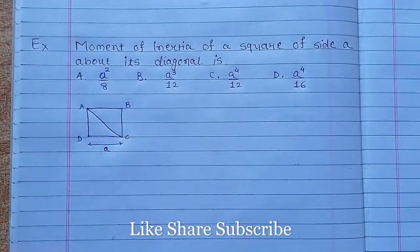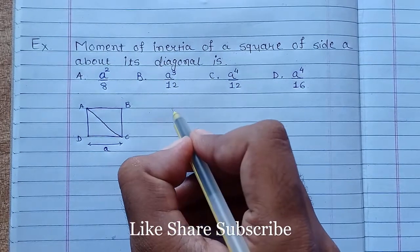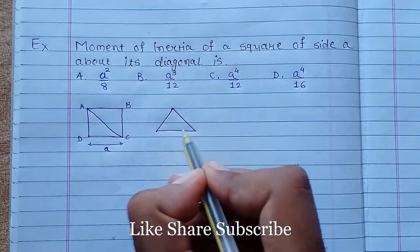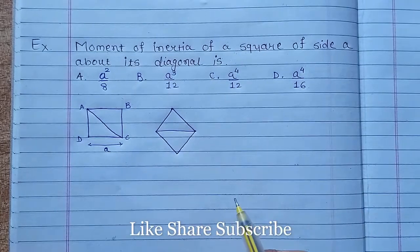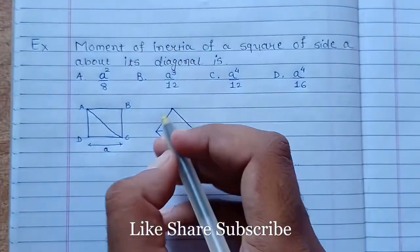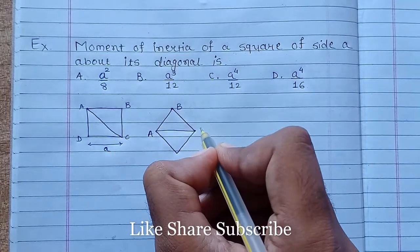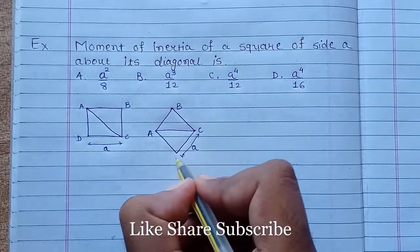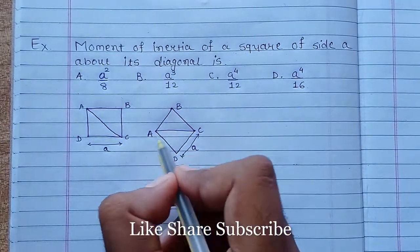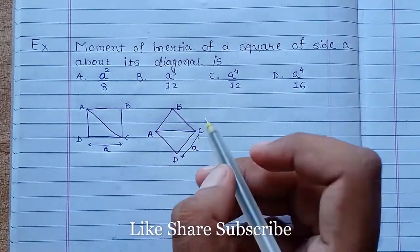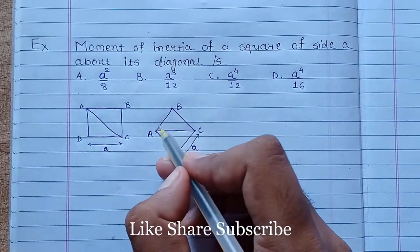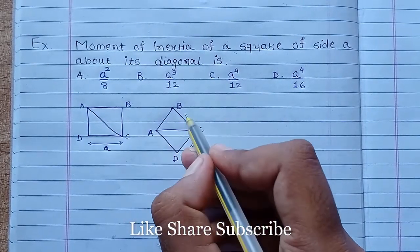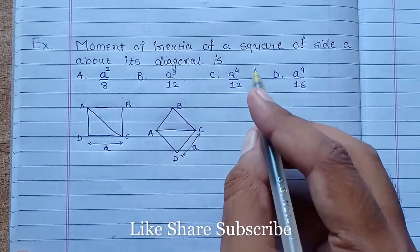Now let's rearrange this figure and make this diagonal axis a horizontal axis. We know that one side of the square is 'a' and this vertex is D. We have to find the moment of inertia about this axis. If we closely observe, this rhombus is comprising of two triangles: ABC and ADC. Let's first talk about the upper triangle, that is ABC.